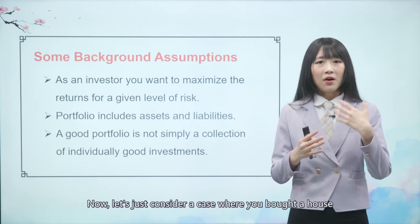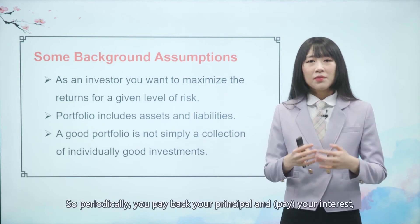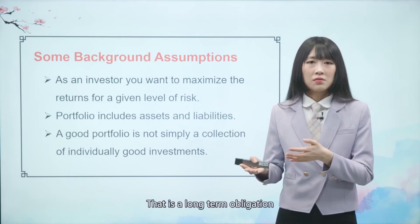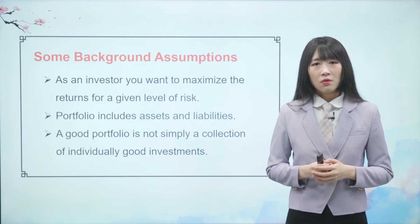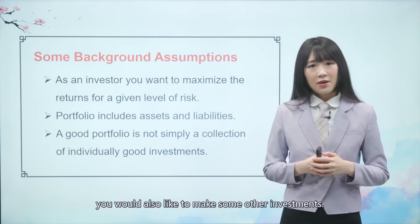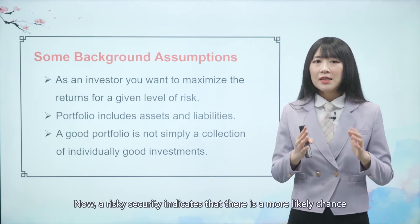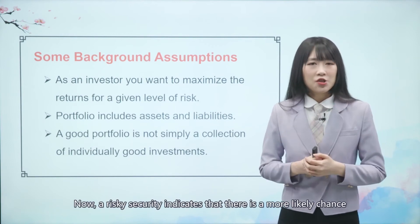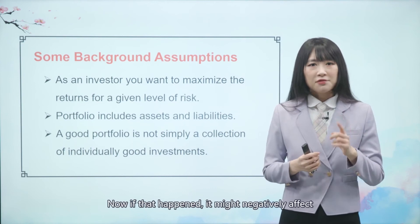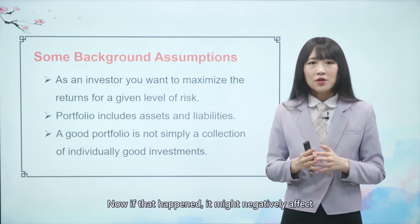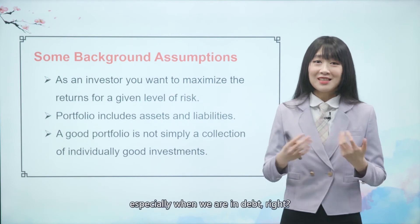Consider a case where you bought a house and applied for a 20-year bank loan. Periodically, you pay back your principal and interest. That is a long-term obligation that isn't going away within 20 years. Within these 20 years, you may also want to make other investments, such as investing in risky securities. A risky security means there's a more likely chance you'll incur a capital loss. If that happens, it might negatively affect your ability to pay back your debt. We don't want to mess up with banks, especially when we are in debt.